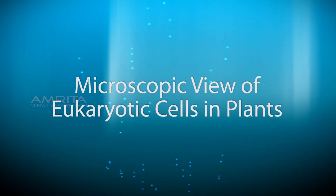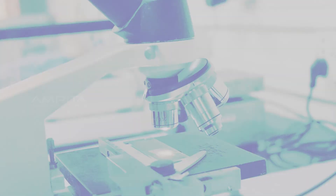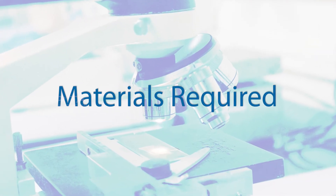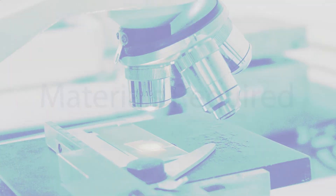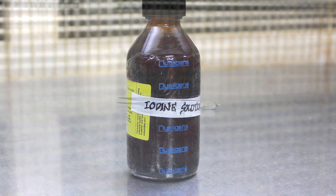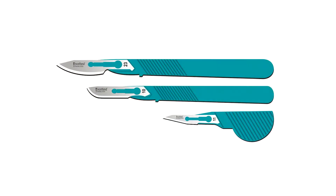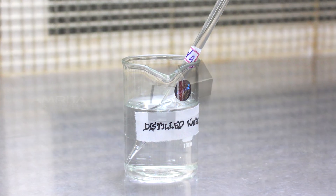For the microscopic view of eukaryotic cells in plants, the materials required are: onion, iodine solution, forceps, slide, scalpel, distilled water, and cover slip.